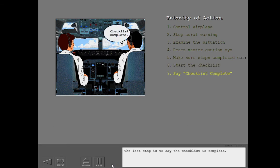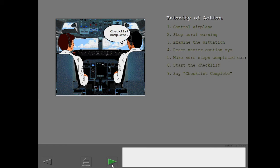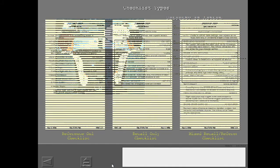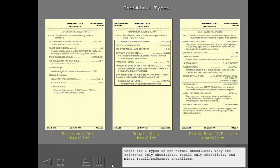The last step is to say the checklist is complete. There are three types of non-normal checklists: reference-only checklists, recall-only checklists, and mixed-recall reference checklists.